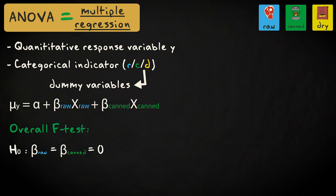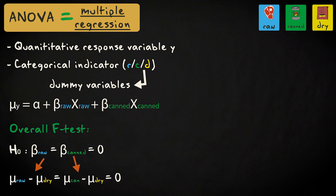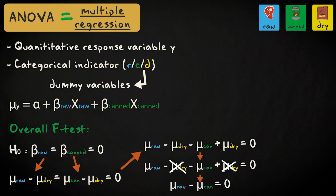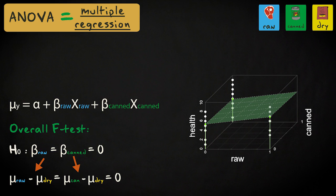With an overall F-test, we test the null hypothesis that all regression coefficients are 0. So we're testing whether the difference between the raw and dry food group is 0 and whether the difference between the canned and dry food group is 0. If we rewrite this equation, we can see that we also implicitly test whether the raw and canned group differ from 0. Since we have only two indicators, we can represent the data visually in a three-dimensional graph.